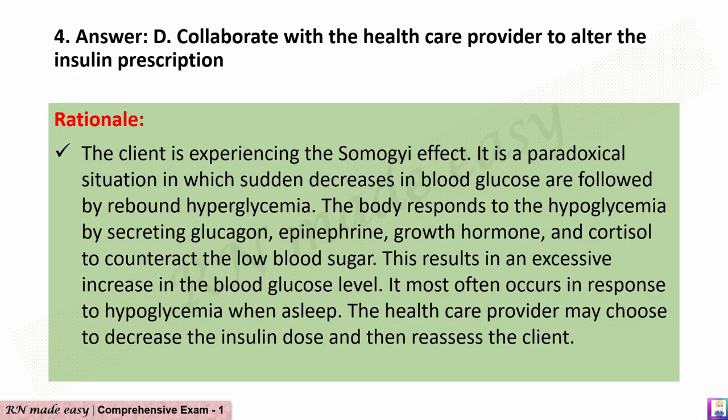The correct answer is D: Collaborate with the healthcare provider to alter the insulin prescription. Rationale: The client is experiencing the Somogyi effect — a paradoxical situation in which sudden decreases in blood glucose are followed by rebound hyperglycemia. The body responds to the hypoglycemia by secreting glucagon, epinephrine, growth hormone, and cortisol to counteract the low blood sugar, resulting in an excessive increase in blood glucose level. It most often occurs in response to hypoglycemia when asleep. The healthcare provider may choose to decrease the insulin dose and then reassess the client.